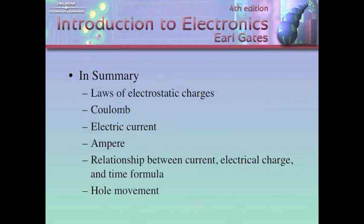In summary, laws of electrostatic charges, opposites attract, like charges oppose. Coulomb, 6.24 times ten to the 18th electrons. Electric current is the flow of electrons in a specified direction. A specified direction is negative to positive. Ampere is one coulomb per second. One amp is equal to one coulomb over one second. One is equal to one over one. And that is the relationship between current, electrical charge, and time. Hole movement, hole flow, positive to negative. Electrons flow negative to positive.